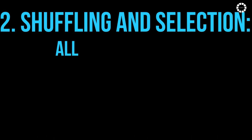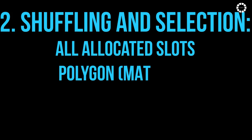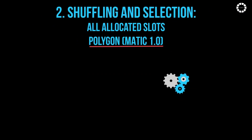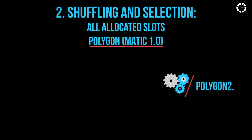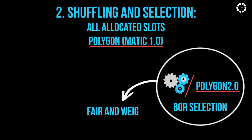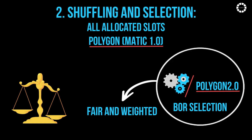Step 2 — Shuffling and Selection: All allocated slots are shuffled using a seed derived from the Polygon Matic 1.0 block hash corresponding to each span. The first producer count producers are selected from this shuffled list. The Bohr module on Heimdall employs the Polygon 2.0 Shuffle algorithm for this selection process, ensuring the process is both fair and weighted according to the validator's power, thereby maintaining balanced and proportional representation in the span committee.